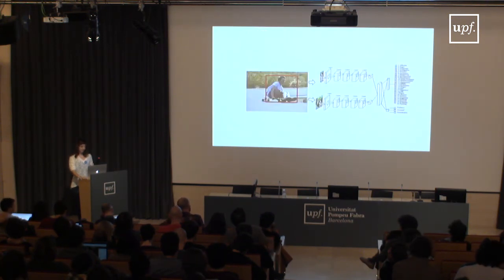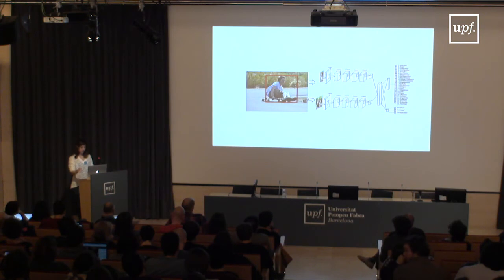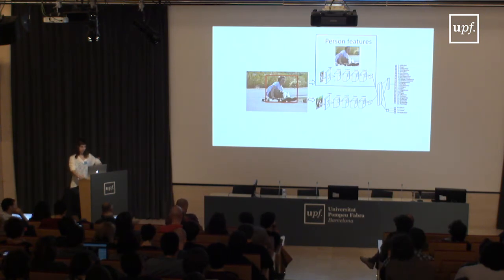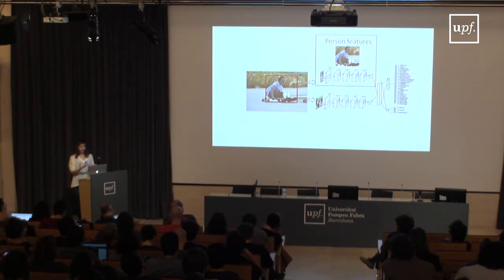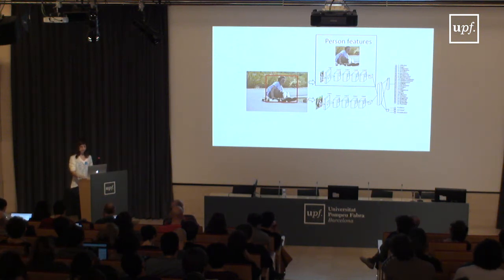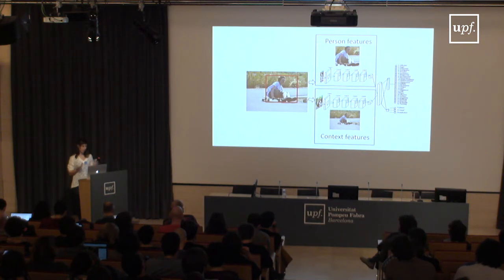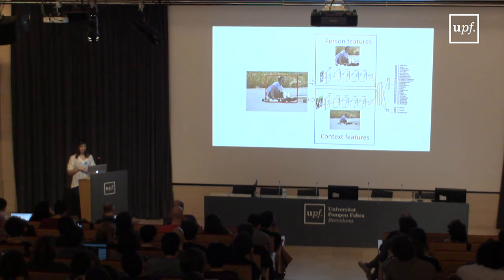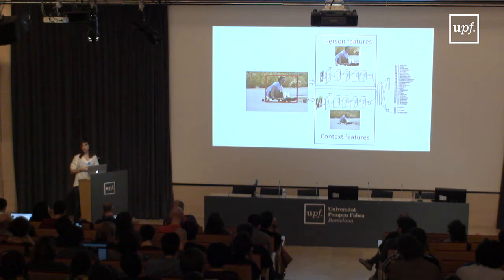We use the EMOTIC dataset to train our deep learning model. This is our baseline model for recognizing emotions in context. It has two separate modules for extracting features: one focused on analyzing the person — processing only the window of the image containing the person — and one processing the whole image to extract contextual features. We then merge these features with a fully connected layer, with a loss function that combines estimation of emotion categories and continuous dimensions.